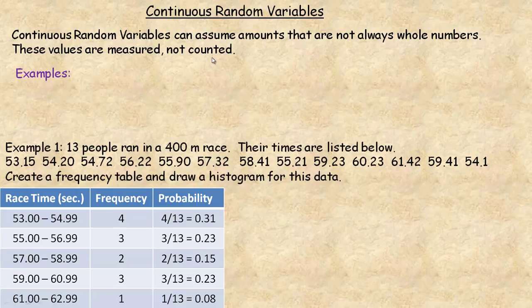Things that are counted would be a discrete random variable because they can only assume generally whole number amounts. For example, the number of people at a concert, the number of times you do something. As soon as it says the number of, it's discrete.